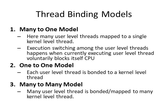The next model is the one-to-one model, where each user-level thread is bounded to one kernel-level thread — as the name suggests, one user-level thread is mapped to one kernel-level thread. The third model is the many-to-many model, where many user-level threads are bounded or mapped to many kernel-level or system-level threads. As the names suggest, the three models are many-to-one, one-to-one, and many-to-many.